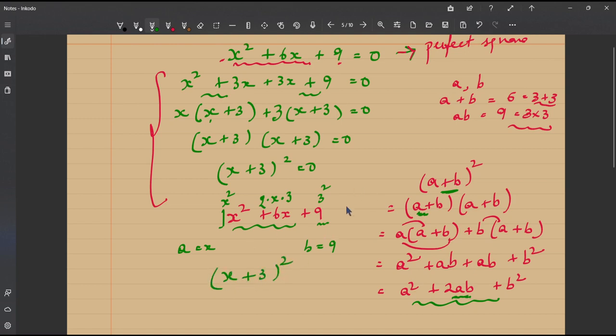So, this quadratic equation x squared plus 6x plus 9 straight away if we are able to identify that this is a perfect square, we can straight away write the factors as x plus 3 the whole squared is equal to 0 and hence the roots of this equation are just taking the square roots on both sides.